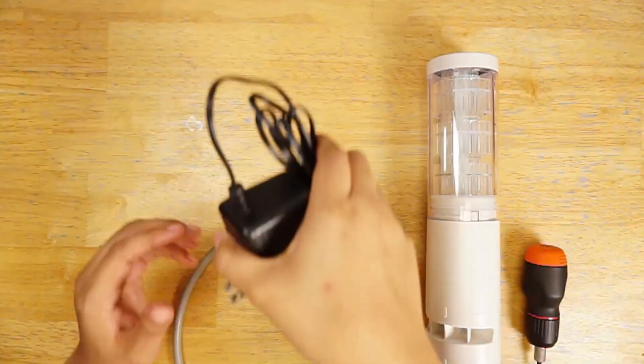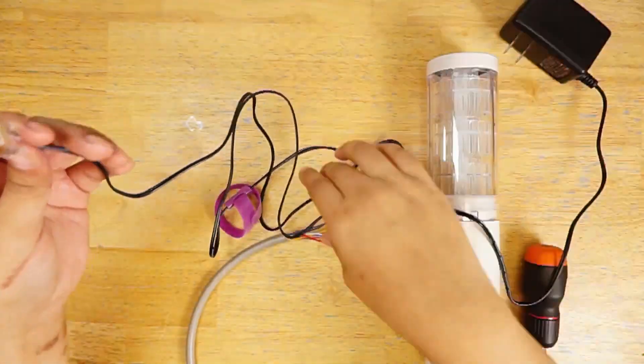We'll take the power supply and apply one side of power to the yellow wire and the other side of power to the gray wire.